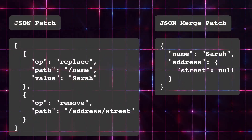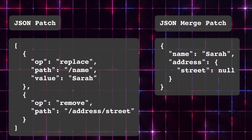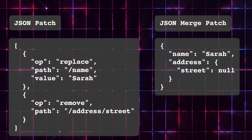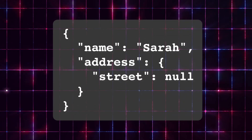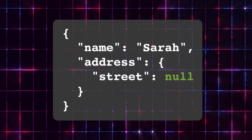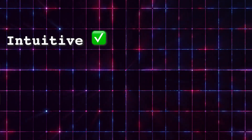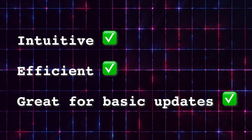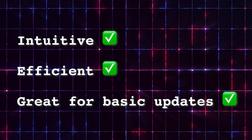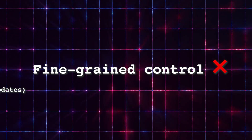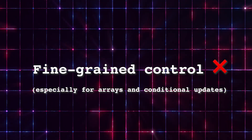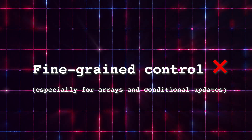On the other hand, JSON Merge Patch is simpler. You just submit a modified version of the document with only the fields you want to change, and fields you want removed are just set to null. It's intuitive, efficient, and great for basic updates, but it lacks the fine-grained control of JSON Patch, especially for arrays and conditional updates.